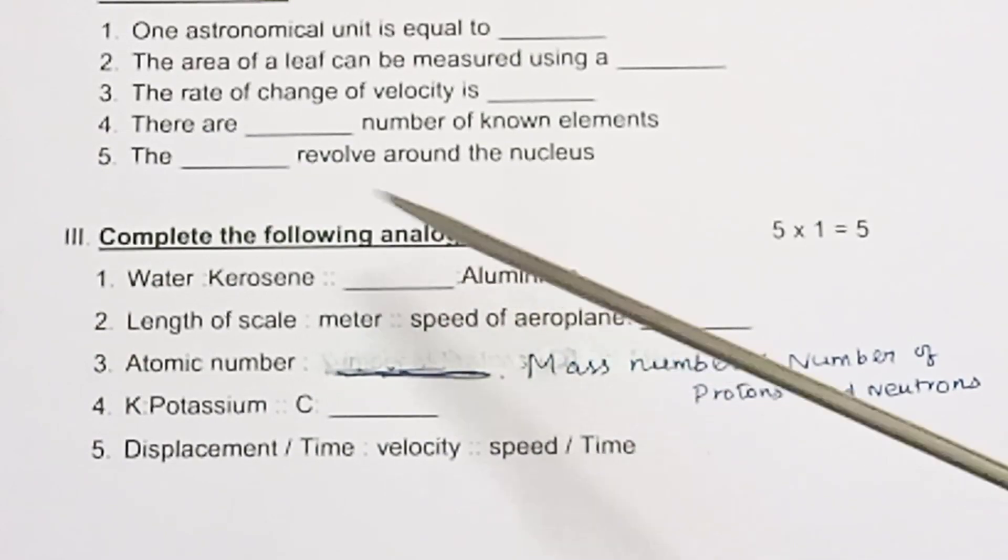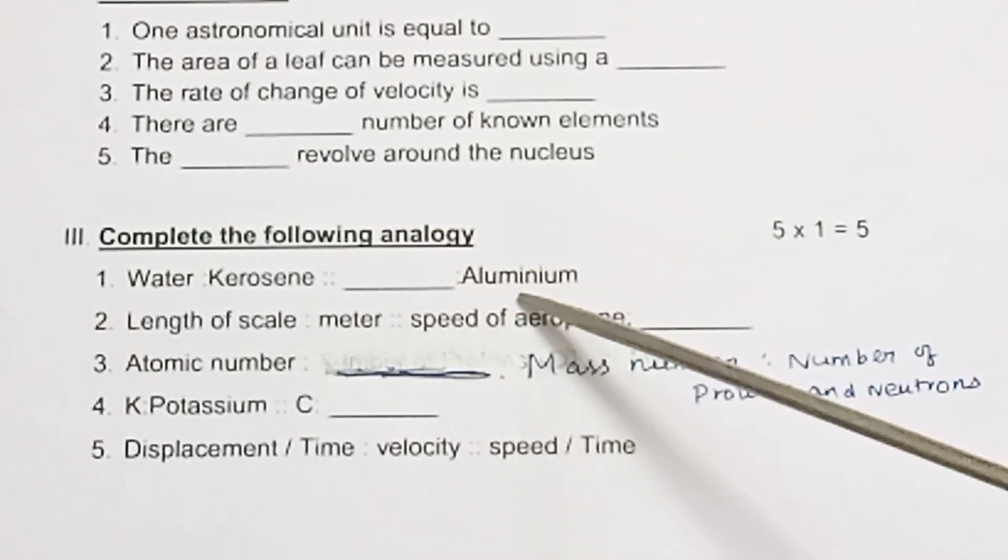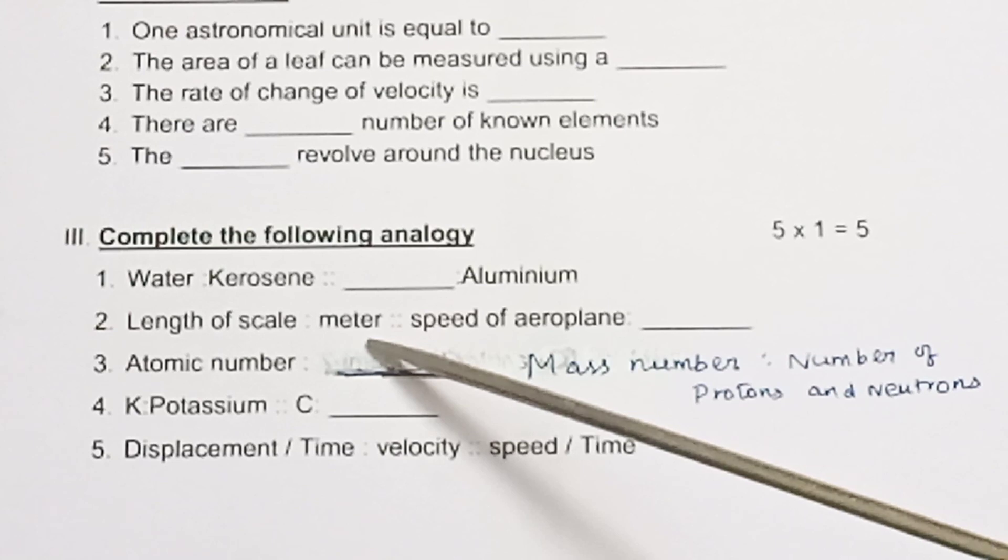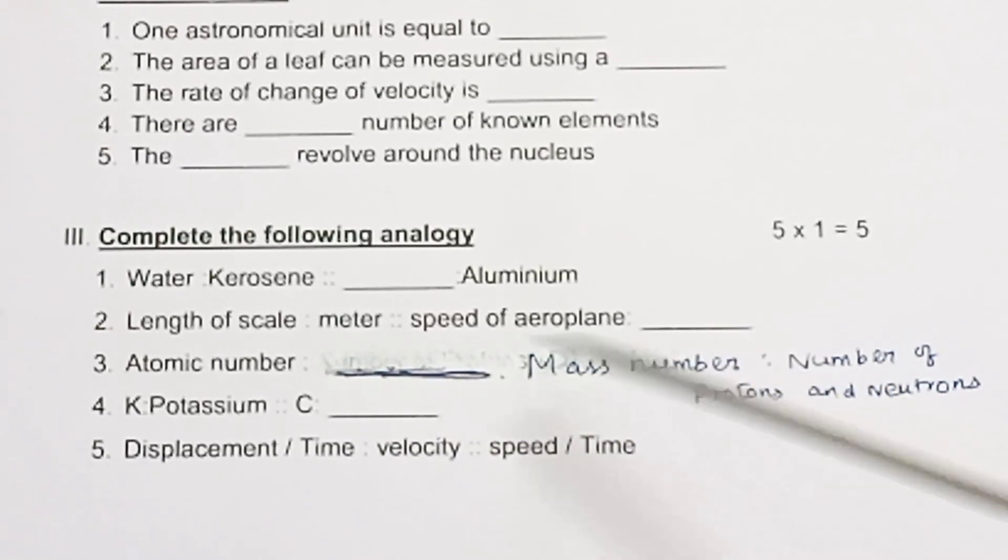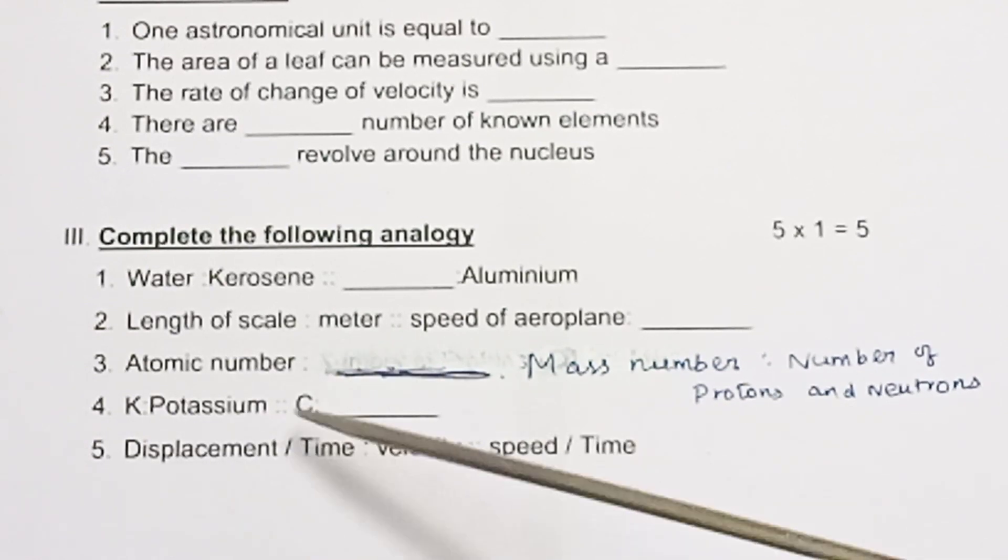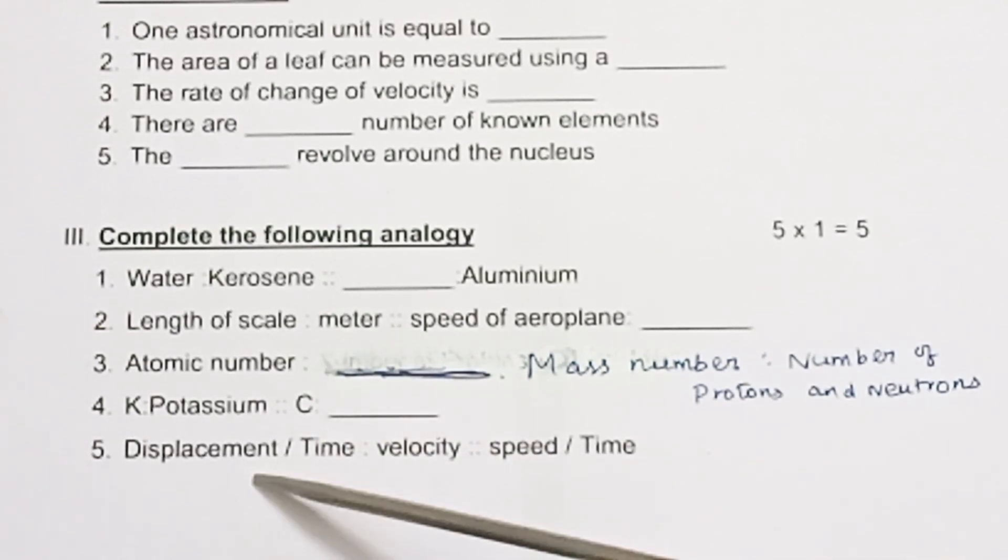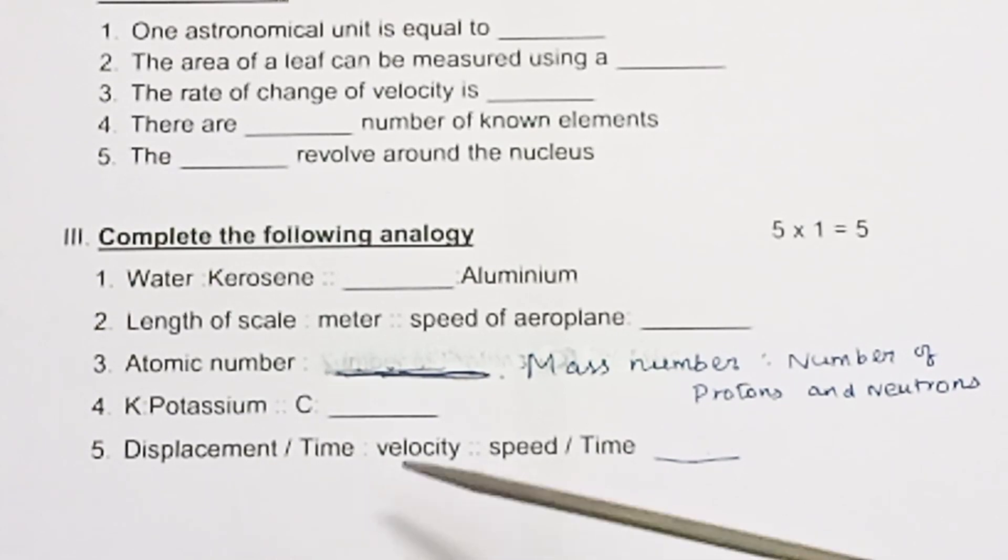The following analogy: water colon kerosene double colon aluminum. Length of scale colon meter double colon speed of aeroplane colon blank. Atomic number colon blank double colon mass number colon number of protons and neutrons. K colon potassium double colon C colon blank. Displacement by time colon velocity double colon speed by time colon blank.